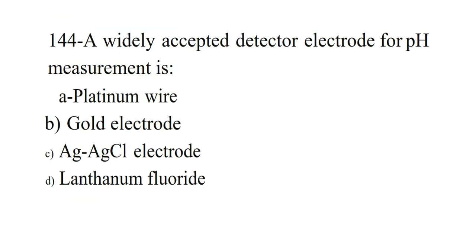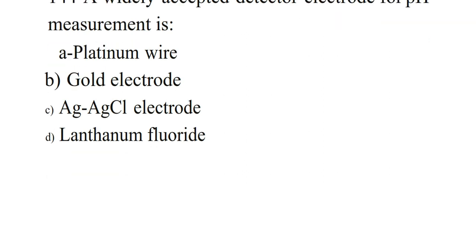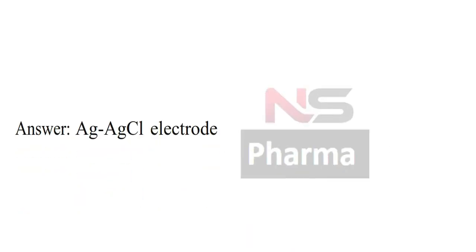Next question. A widely accepted detector electrode for pH measurement is: Option A Platinum wire, Option B Gold electrode, Option C Ag-AgCl electrode, Option D Lanthanum fluoride. Answer: Ag-AgCl electrode.